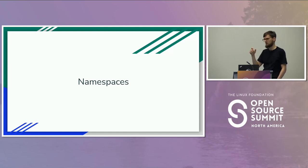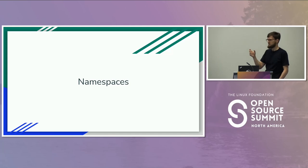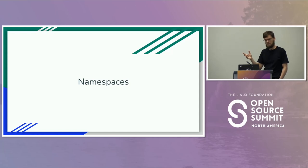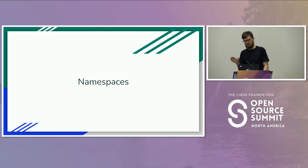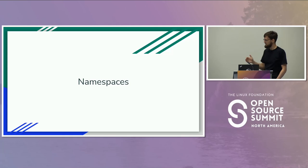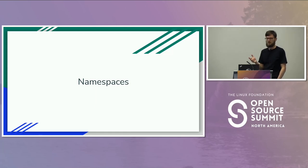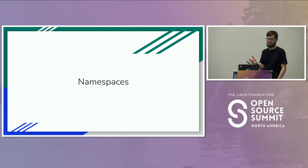Network namespaces isolate network devices. When you clone or create a new network namespace, all network devices on the host disappear, and you're left to figure out how to give network connectivity to your container — which leads to things like Kubernetes network plugins. Network namespaces isolate routing, IP addresses, and all that kind of stuff. IPC namespaces are usually the most uninteresting one — just isolating inter-process communication: SysV semaphores, IPC message queues, and so on.